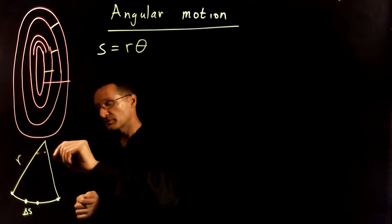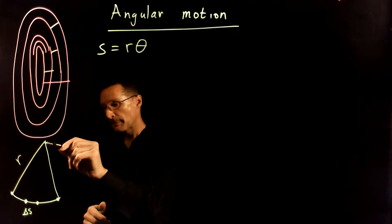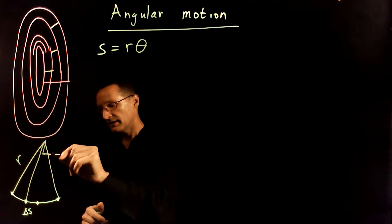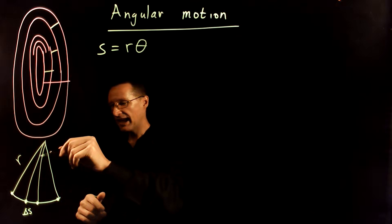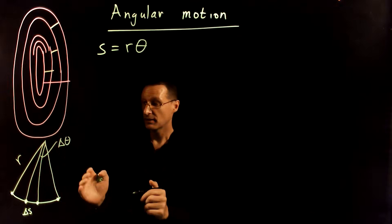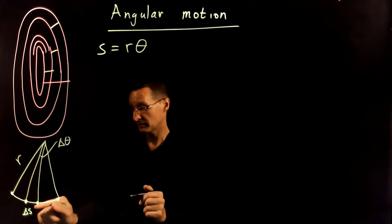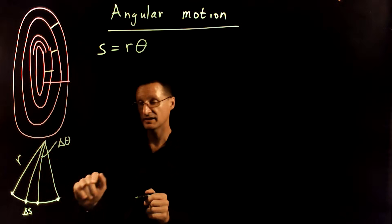And of course, as this is happening, this is traveling on part of a circle with radius R, and there's an angle that's being displaced here, or an angular displacement, delta theta, that we're traveling through as we achieve this arc length or this displacement at the bottom.